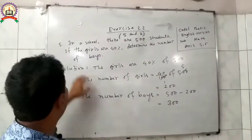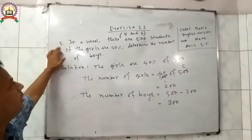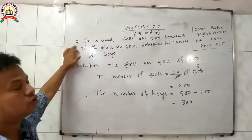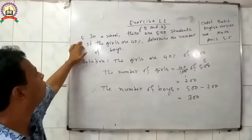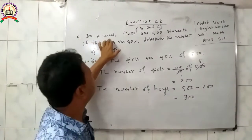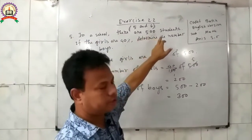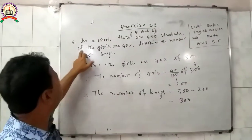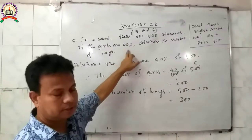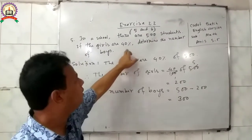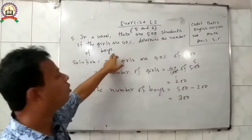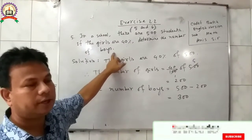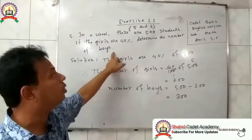Now, solving question number 5 from exercise 2.2. In a school, there are 500 students. If the girls are 40%, determine the number of boys. You have to find out the total number of boys.